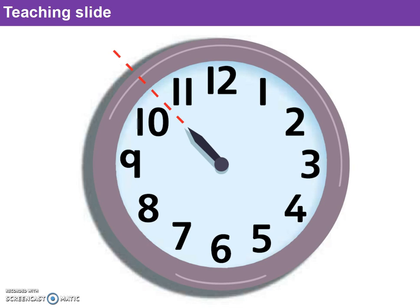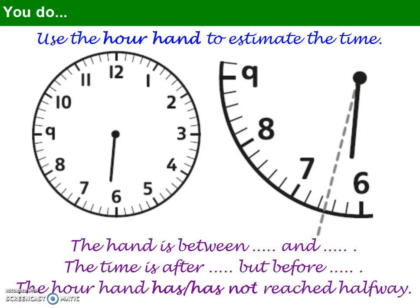Let's see whether we can follow those strategies before moving on to the rest of the questions. For this question, use the hour hand to estimate the time. On the left you've got the whole clock, and on the right a close-up with some information to help you. Use three prompts: the hand is between which hour and which hour? The time is after which hour but before which hour? And has the hour hand reached the halfway point or not? This will help you identify the time. Pause the video and estimate what time the clock is showing.